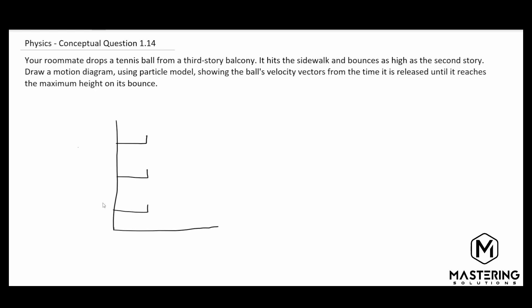So here we have the three balconies. This is the first floor, second, and the third floor balcony. And then they say that your roommate drops a tennis ball from up here on the top of the third floor, and then it comes down.